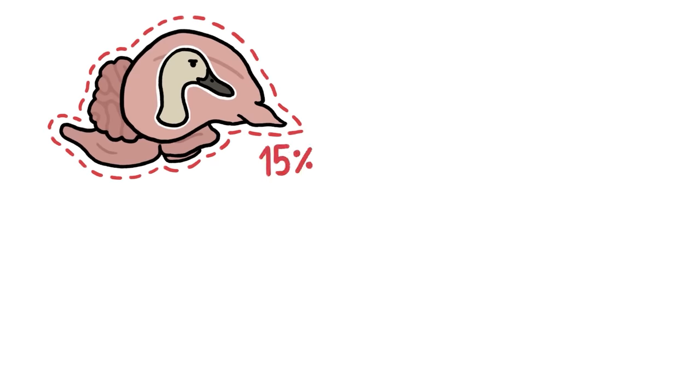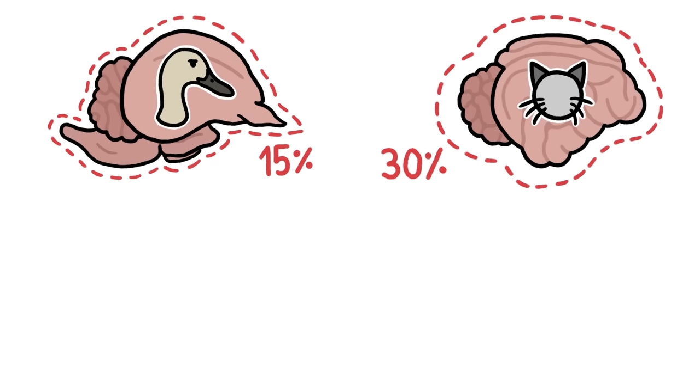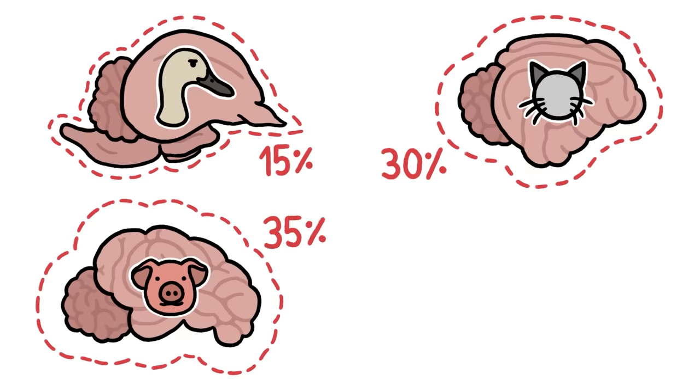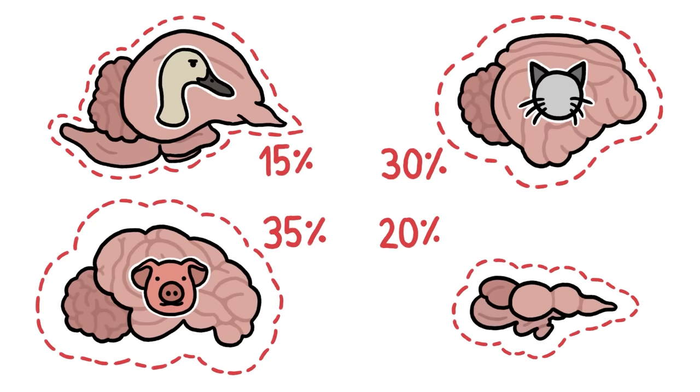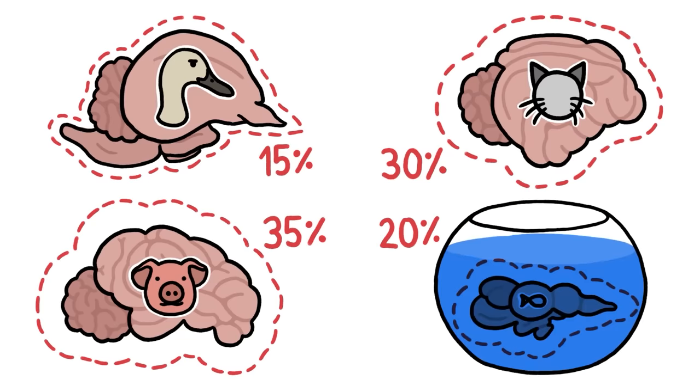Duck brains have shrunk by about 15%, cat brains by 30%, and pig brains by a whopping 35%. We've even found smaller brains in farmed trout. Which is weird,